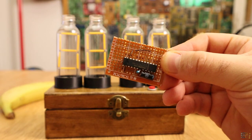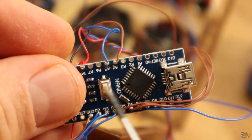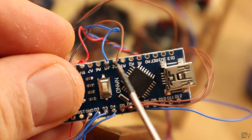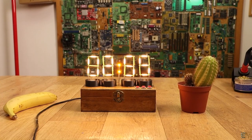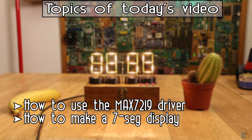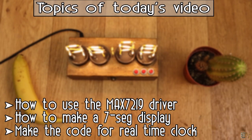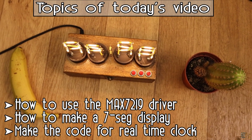To control 4 of these 7-segment displays, I'm using the MAX7219 driver and that will make everything easier. In this video, you will learn how to make the homemade 7-segment displays, how the MAX7219 driver works and multiplexes the outputs, how to create the code for real-time clock and build the vintage look clock.